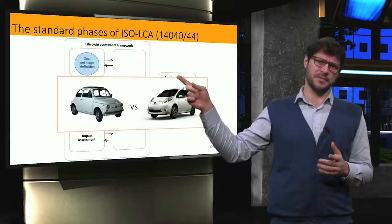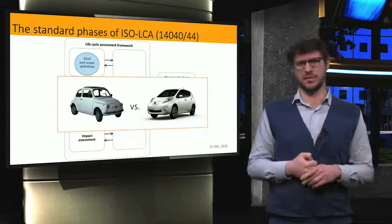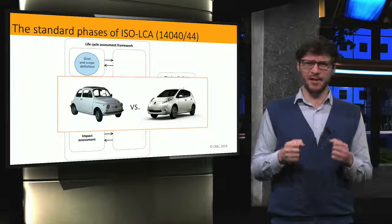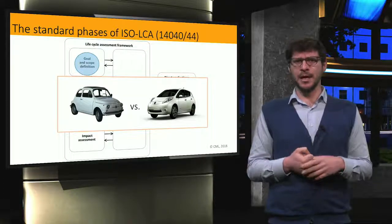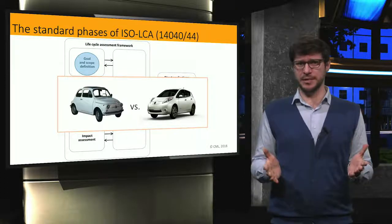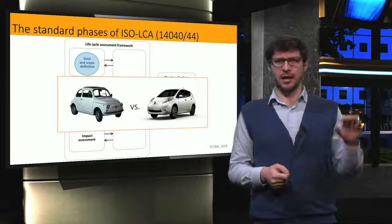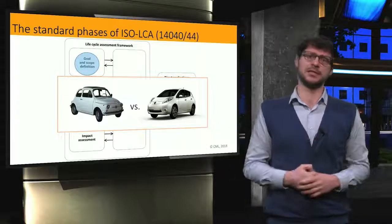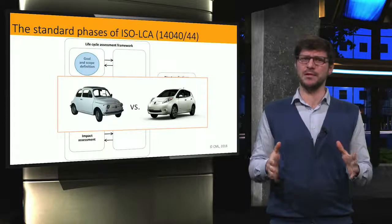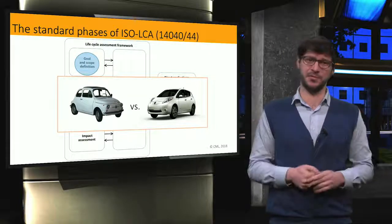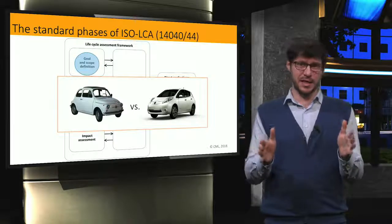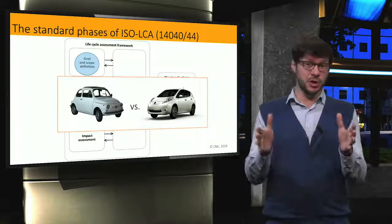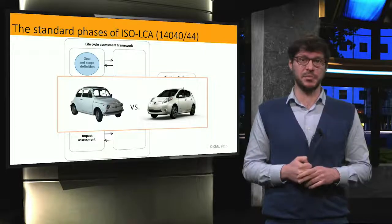In the goal and scope phase, the aim of the study is defined and the related questions are framed — such as what is the intended application of the results. The function of the systems assessed is defined here. LCA studies typically conduct comparisons based on functionality; for example, alternative cars are compared based on the delivery of one kilometer of driving over a specific period of time and distance. This unit of comparison is called the functional unit, and it is a quantitative description of the function fulfilled by the system under assessment. The system boundaries are also set during this phase, and given the complexity of input-output interactions, choices need to be made and some parts of the system will need to be cut off from the analysis.